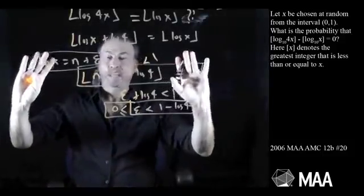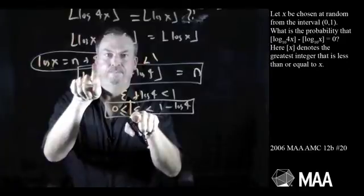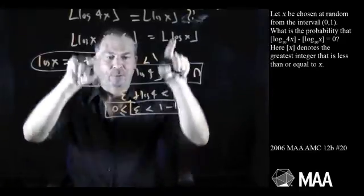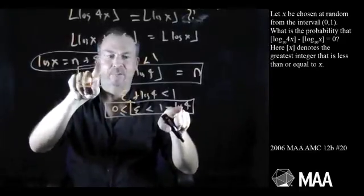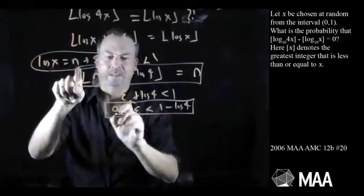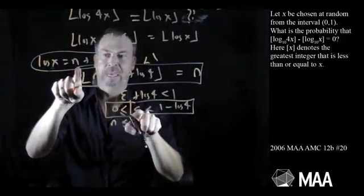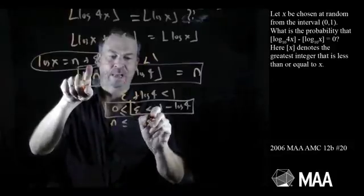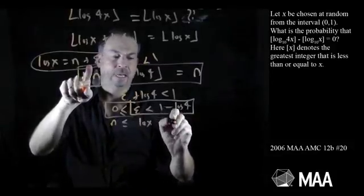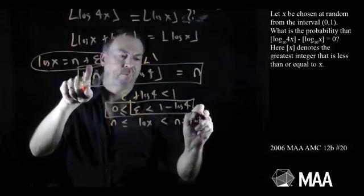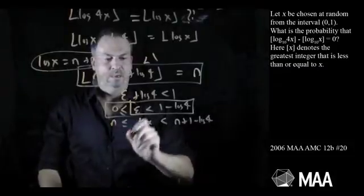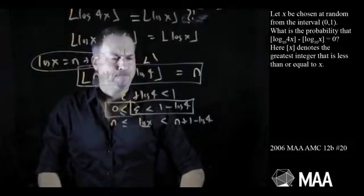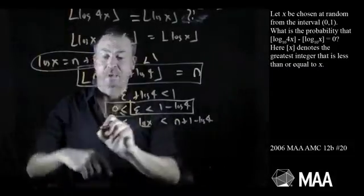I've got epsilon. Maybe I should make this a statement about x again. Let's unravel this all about x's. If I add n to everything, that's really going to be about log of x. So n is less than or equal to n plus epsilon, log of x, is less than n plus 1 minus log of 4. Log of x, that's really awkward.